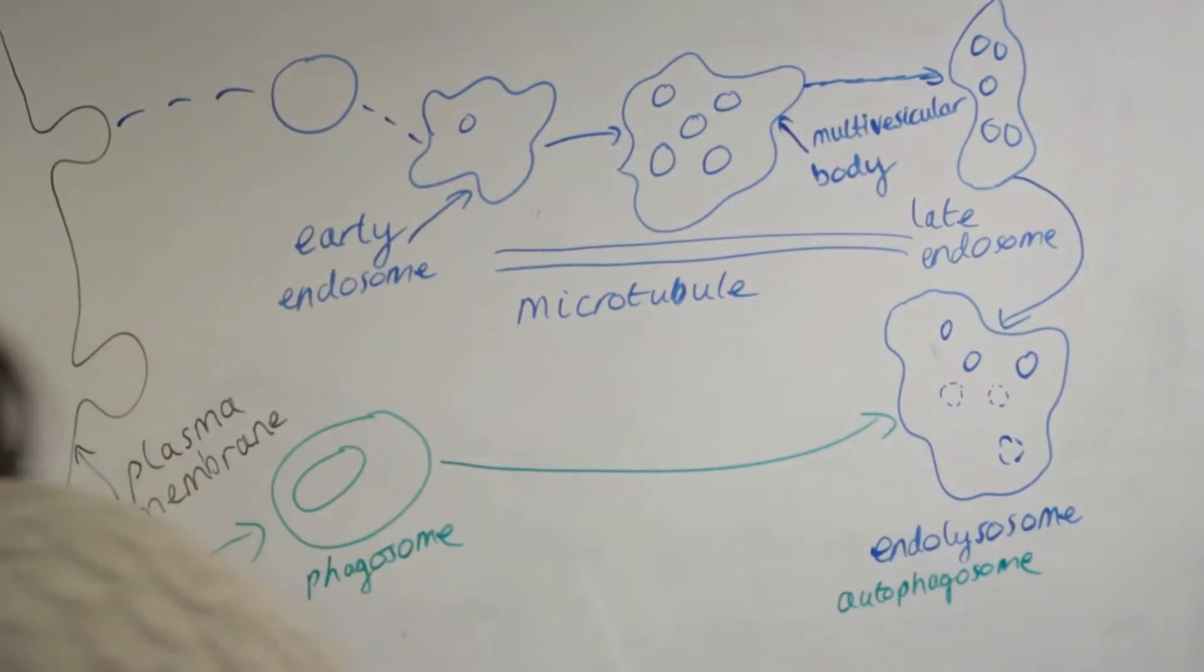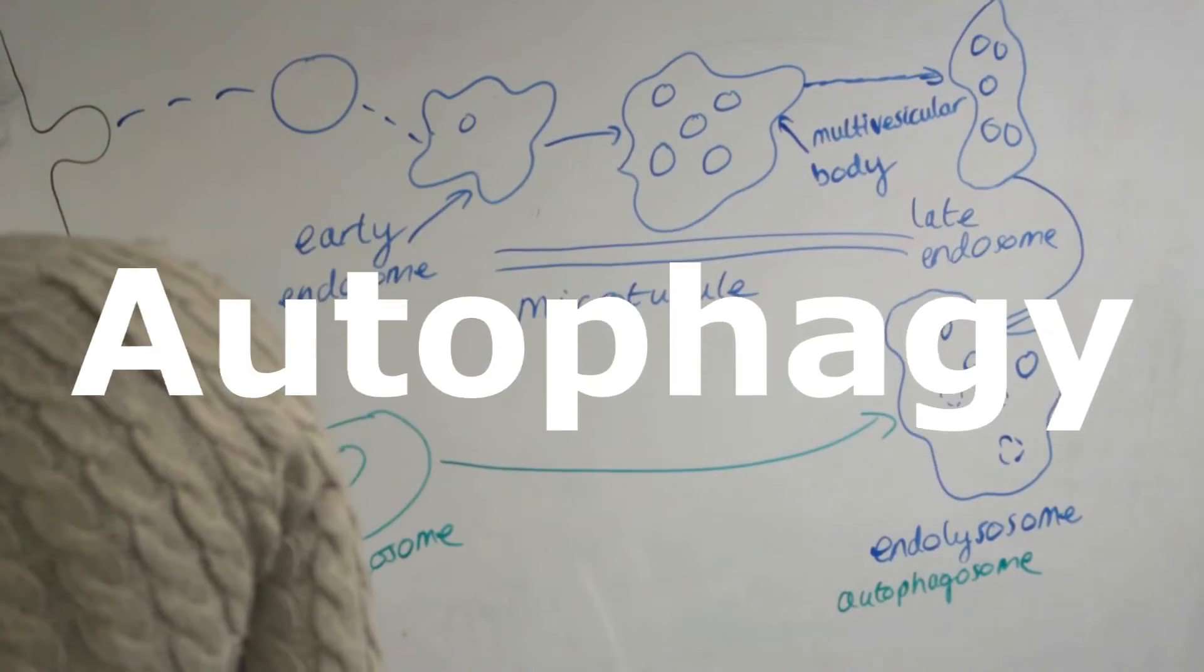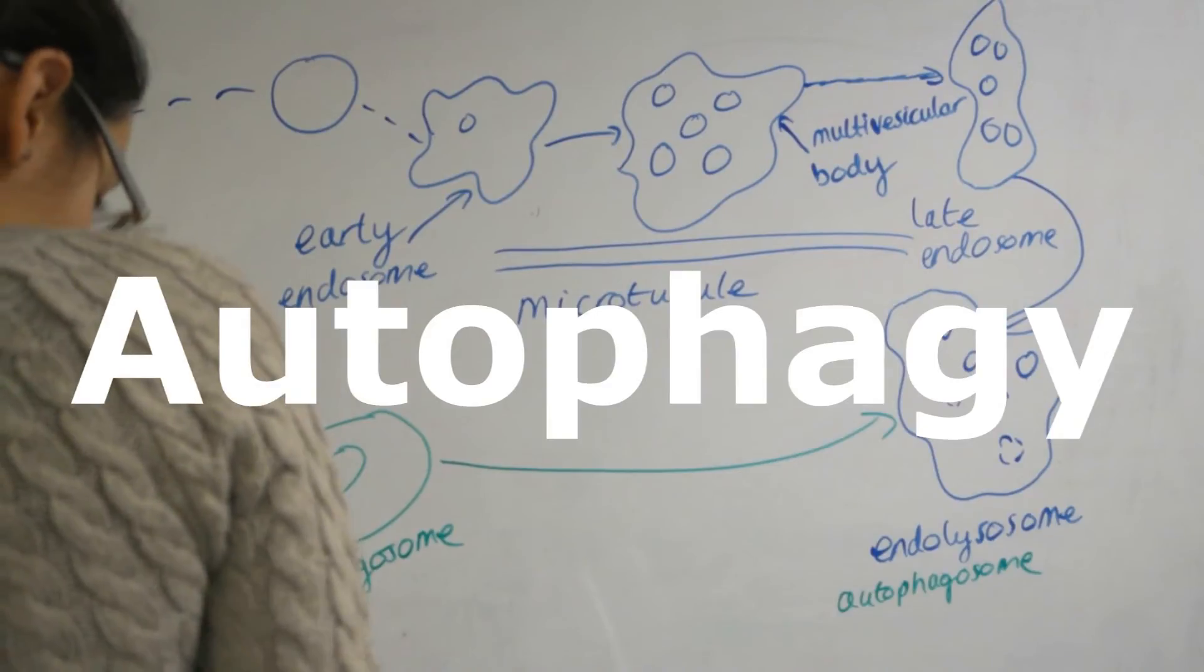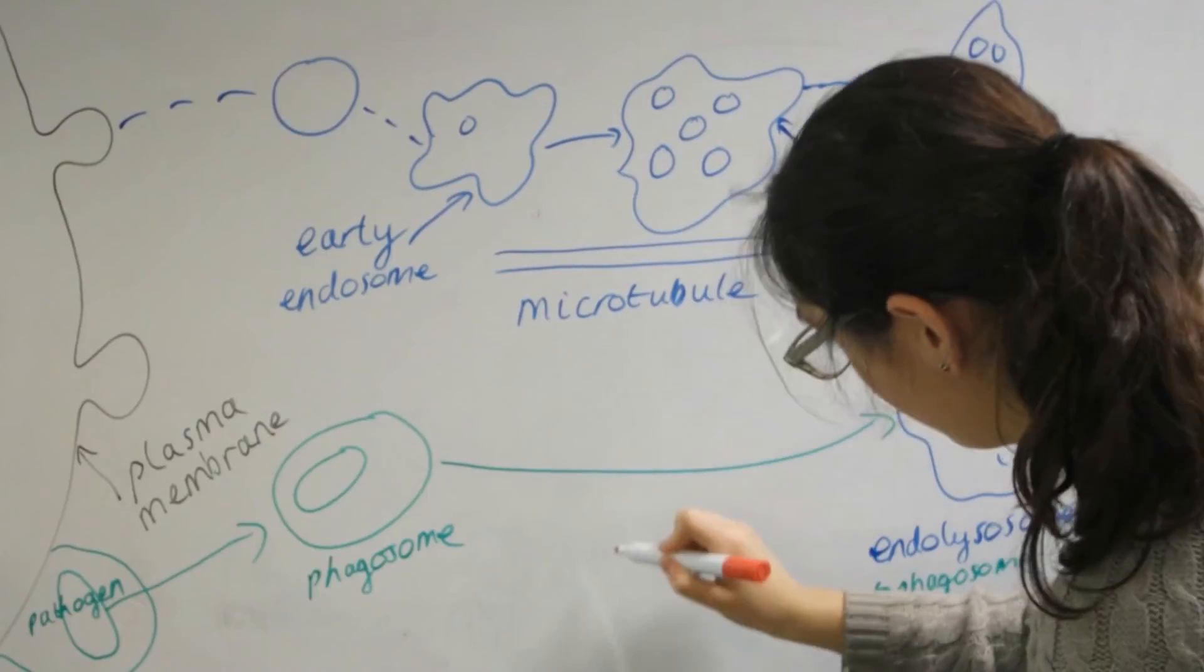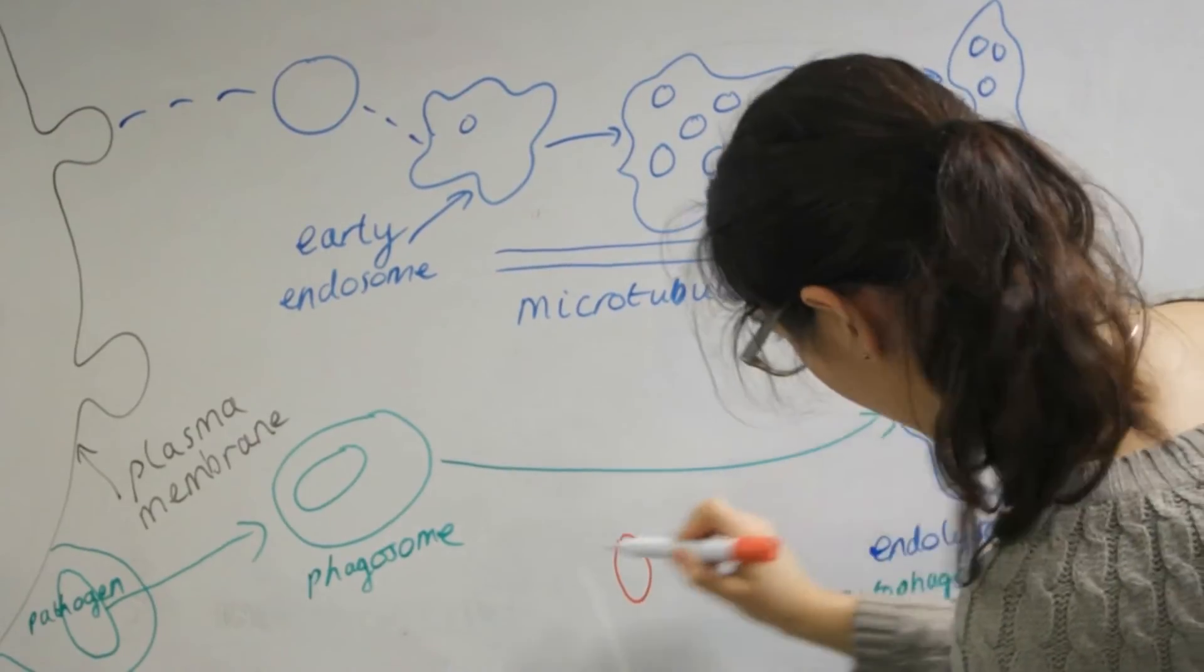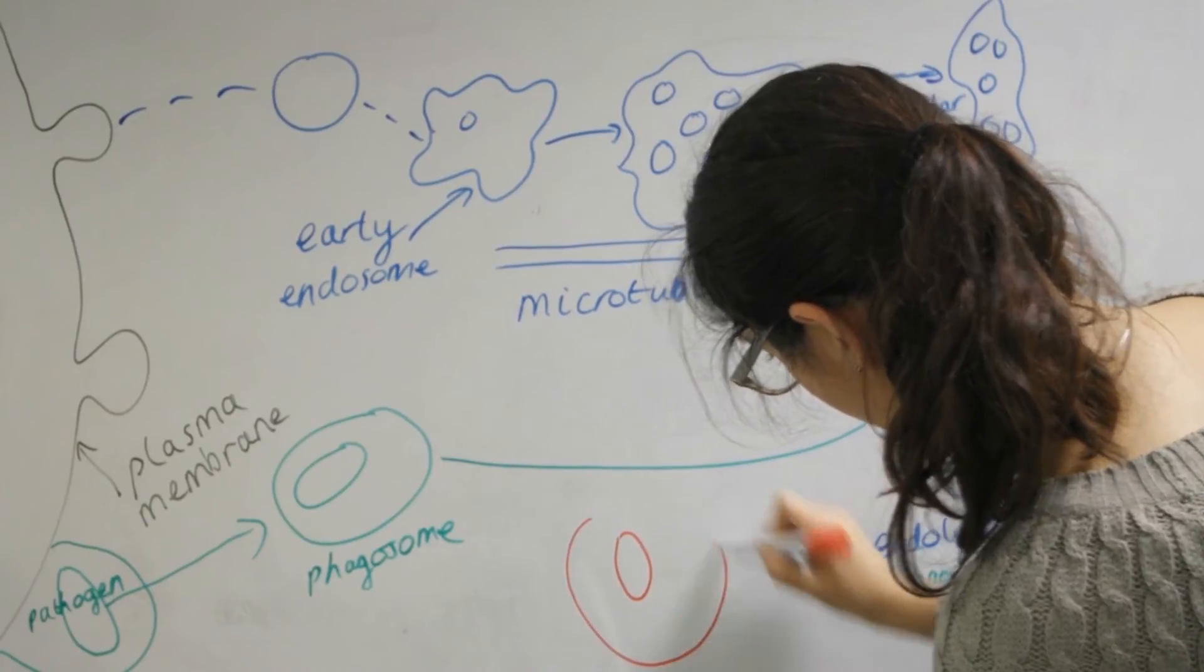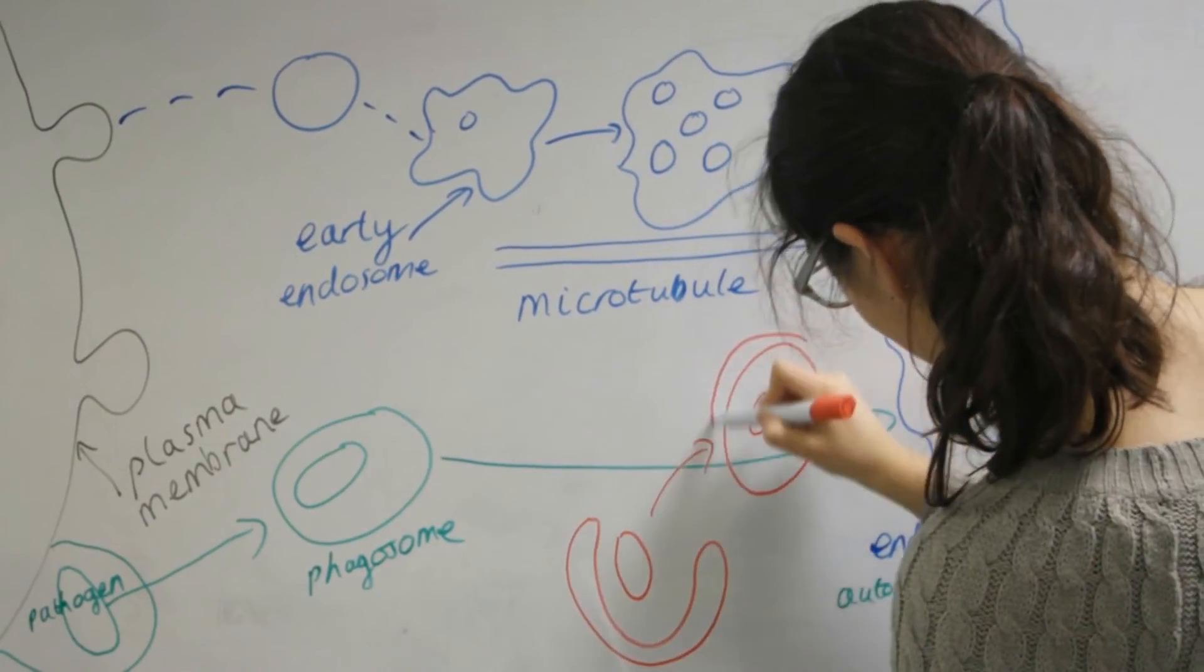The third pathway of degradation is called autophagy, which is when one of the cell's own components is degraded by the lysosomes. This component of the cell could be for example an old or malfunctioning organelle. The organelle that's going to be degraded is surrounded by membrane which is called an autophagosome.